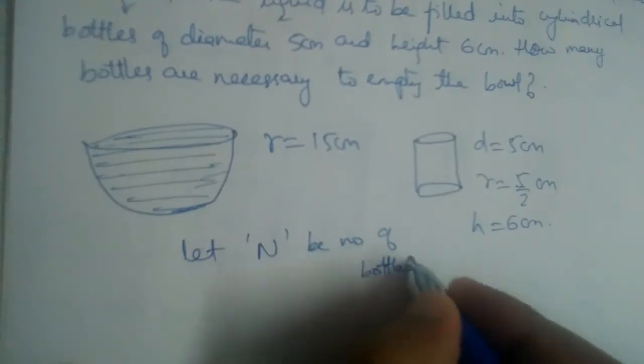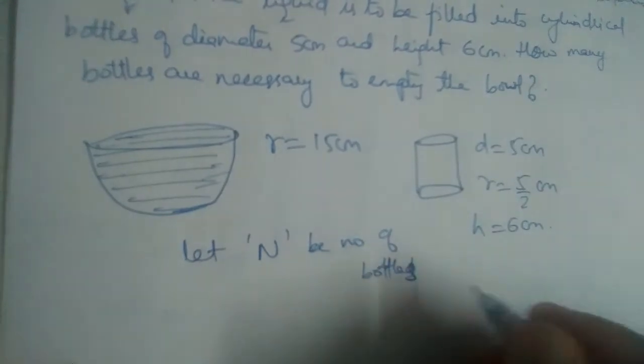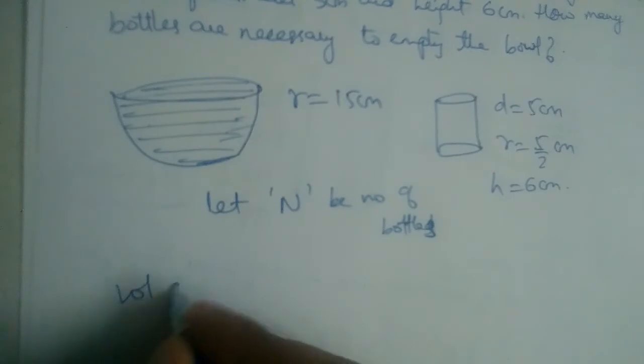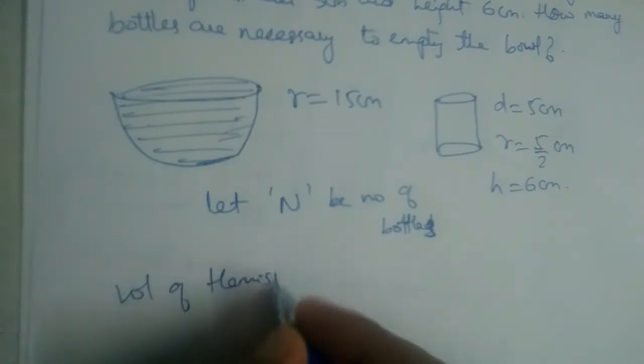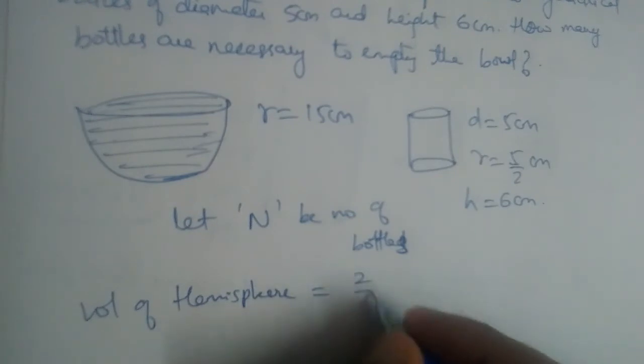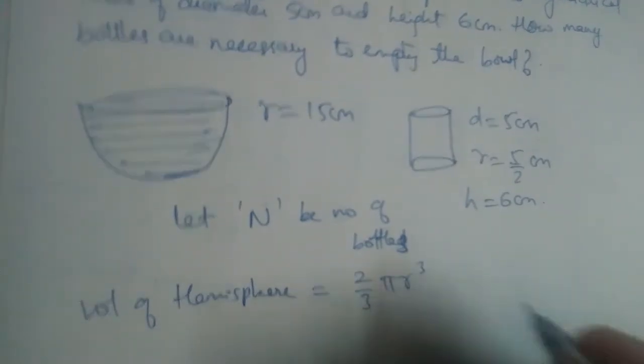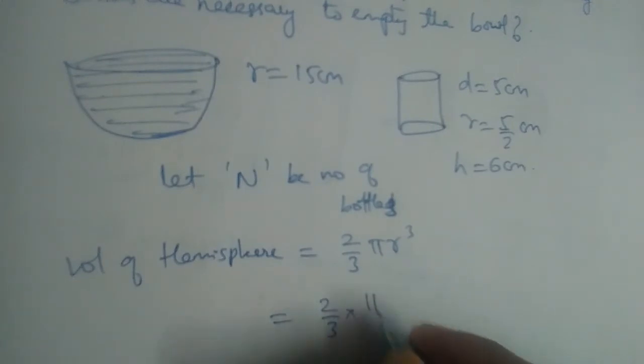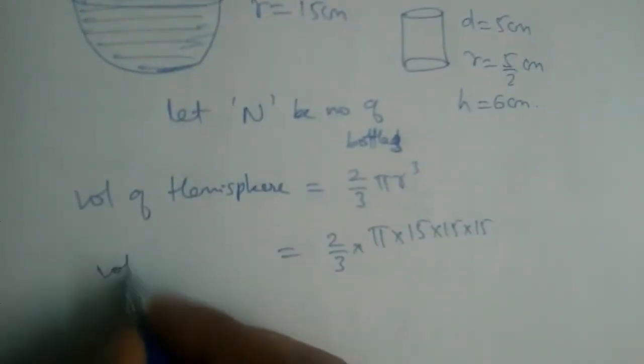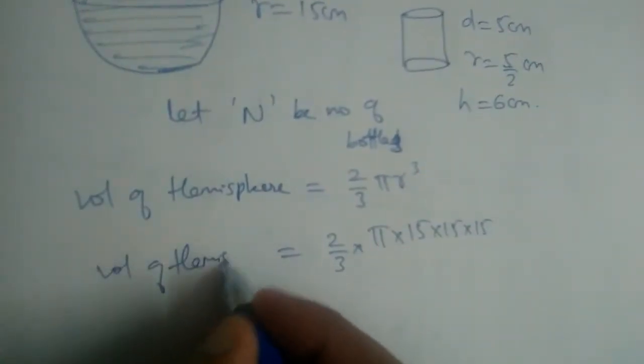Let n be the number of bottles that will be filled from this liquid. First, let us find the volume of the hemisphere. The volume of a hemisphere is 2/3 π r³, so this is 2/3 π times 15 times 15 times 15.